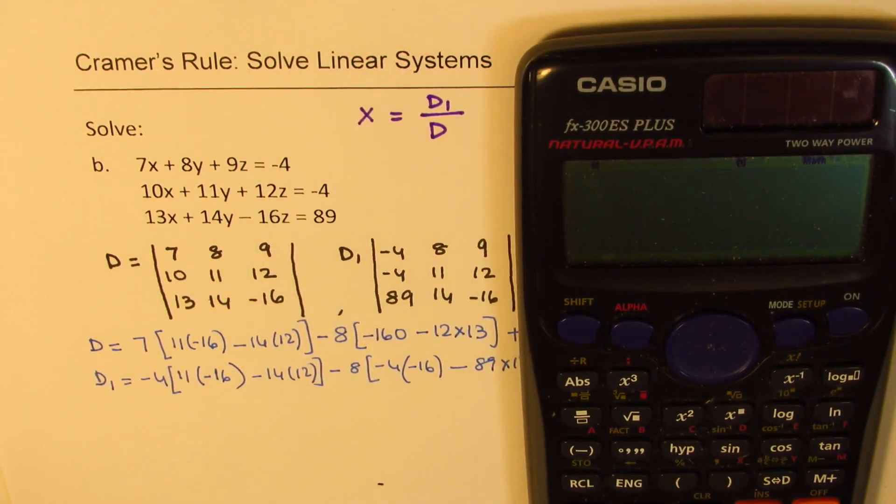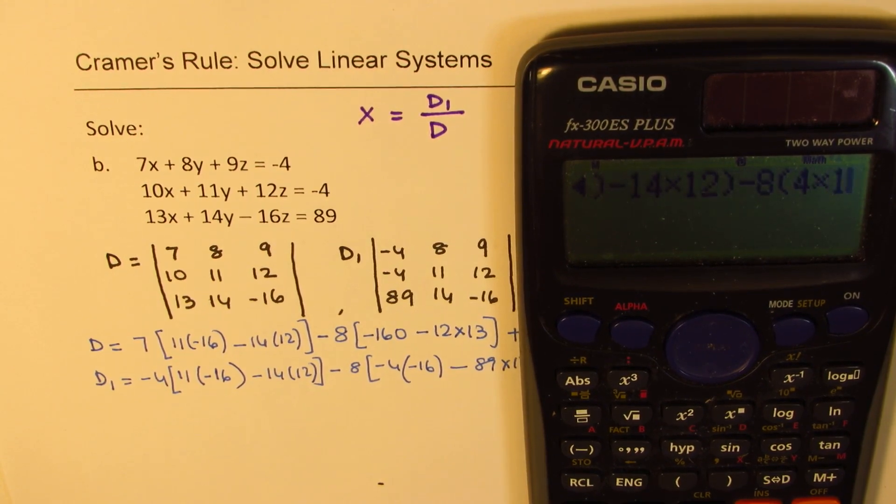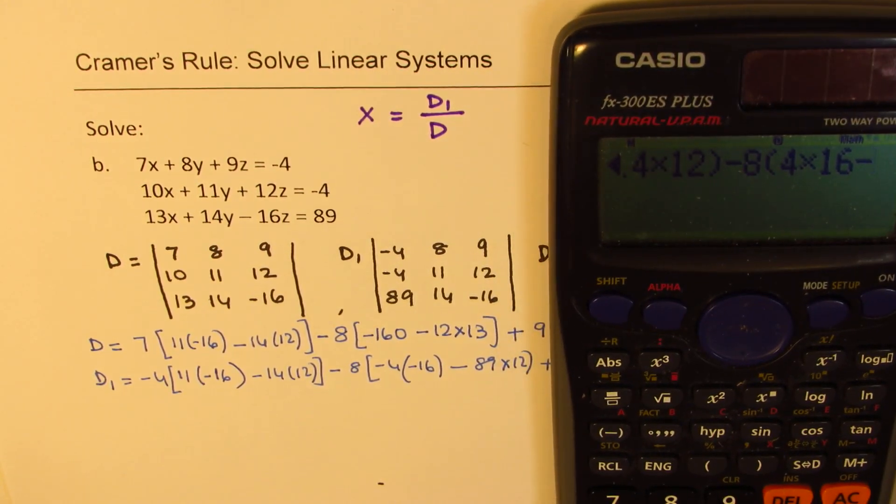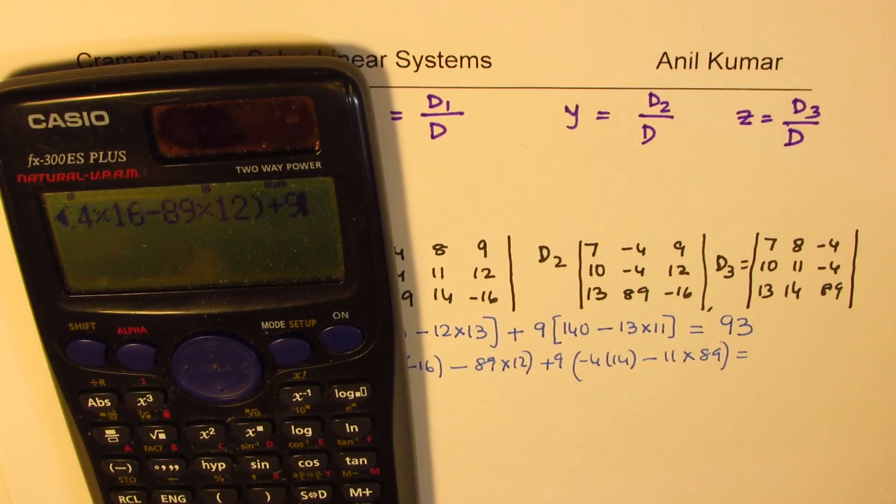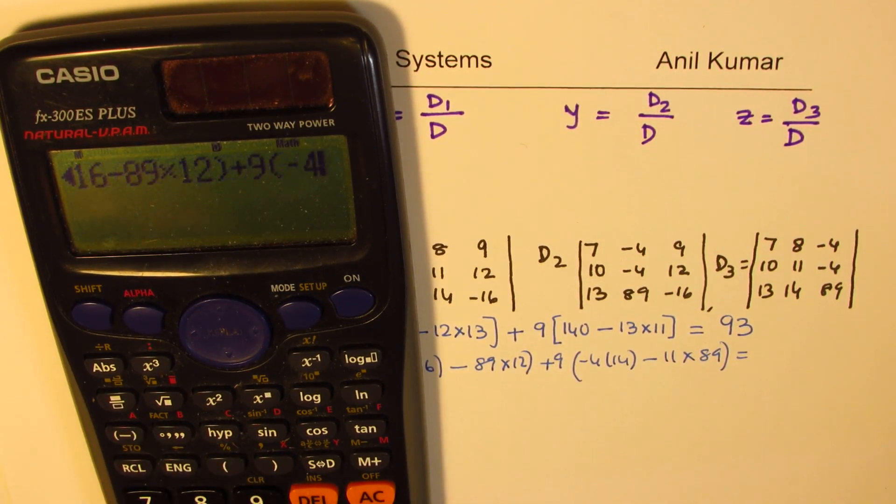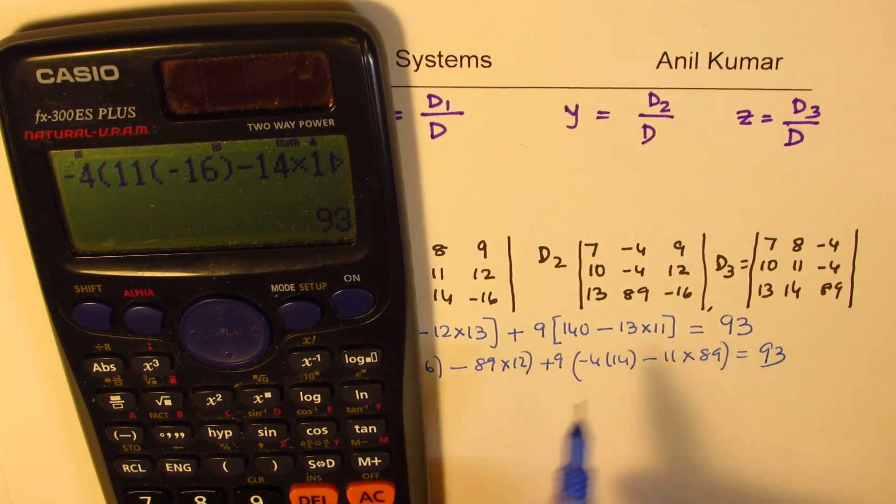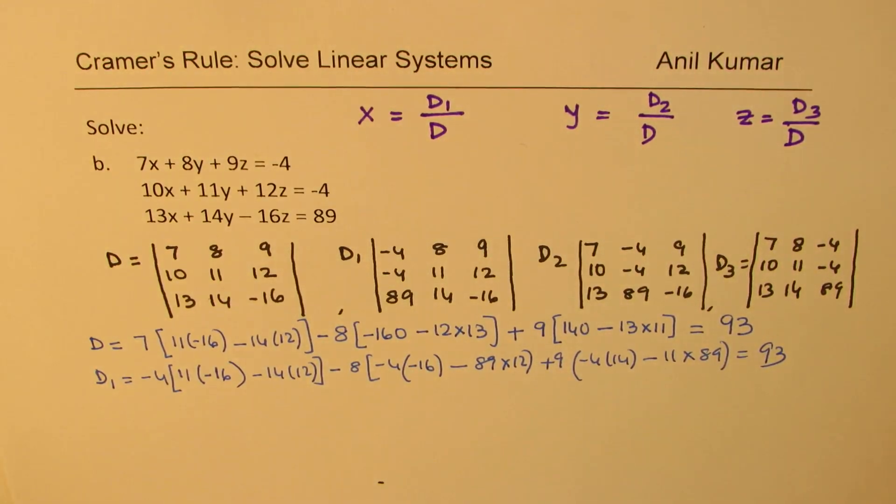So, we get, we start with a -4. So, we said -4, within brackets, we have 11, within brackets, -16, minus 14 times 12. Bracket close, minus 8, within brackets, we can write 4 times 16, minus 89 times 12. Bracket close, and then, we have plus 9. And within brackets, it is -4 times 14. Take away, 11 times 89. Bracket close, equals to what? 93. We've got the same number, 93. So, the X value is 1. Do you get the idea?